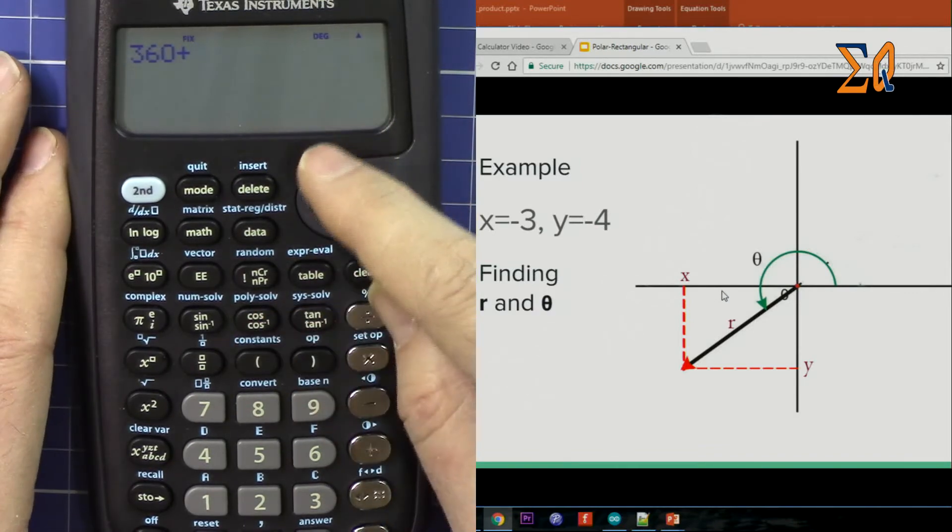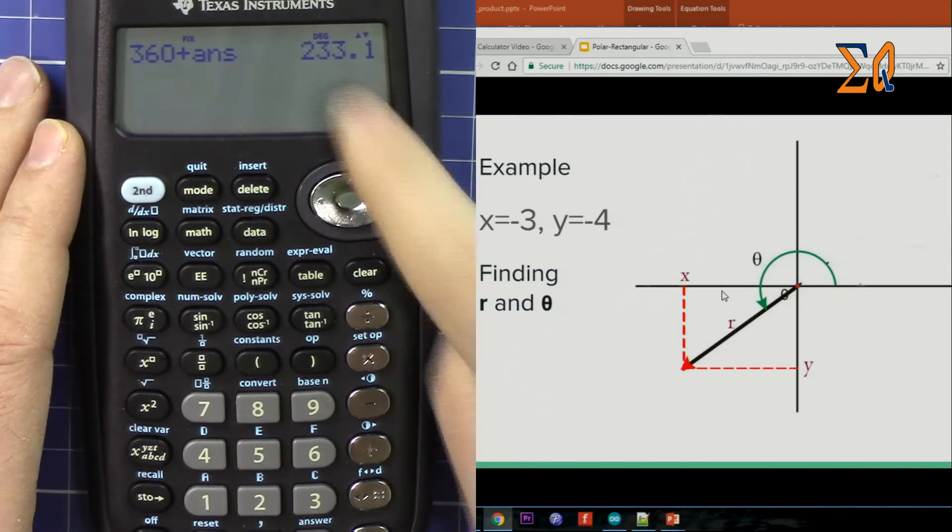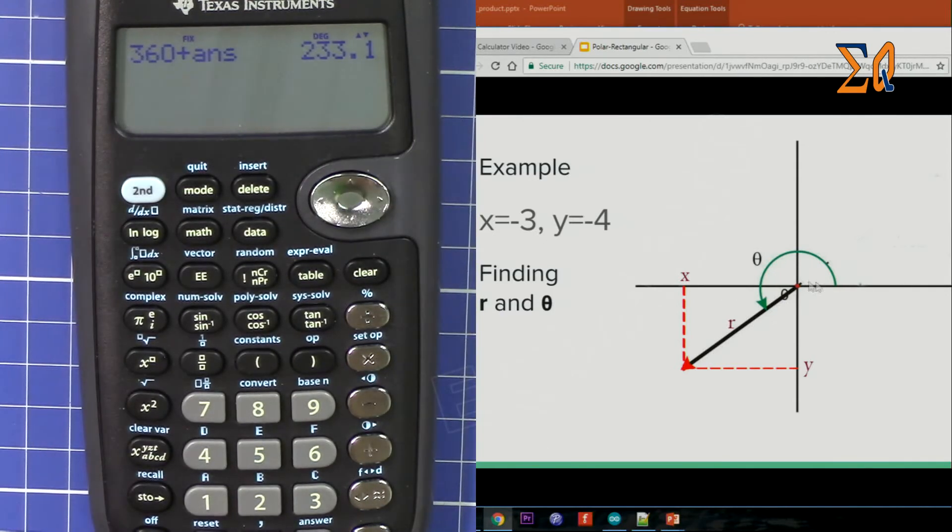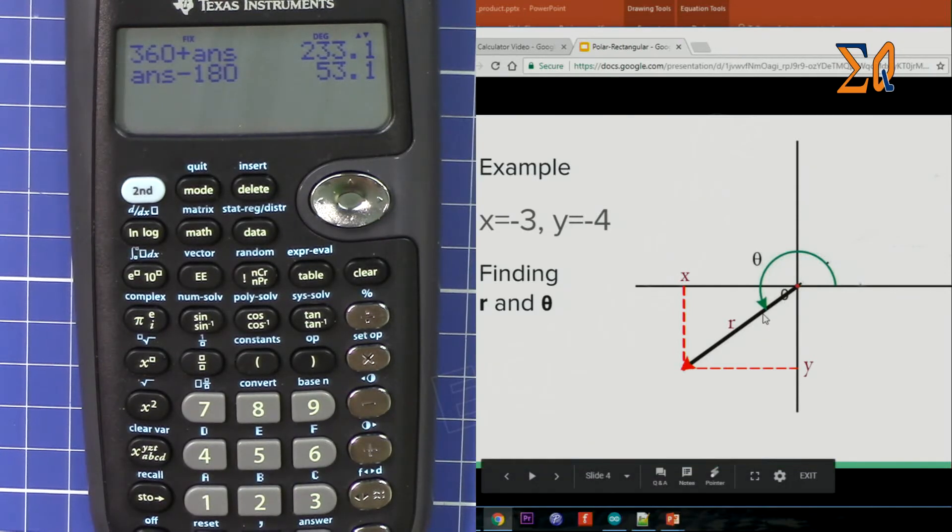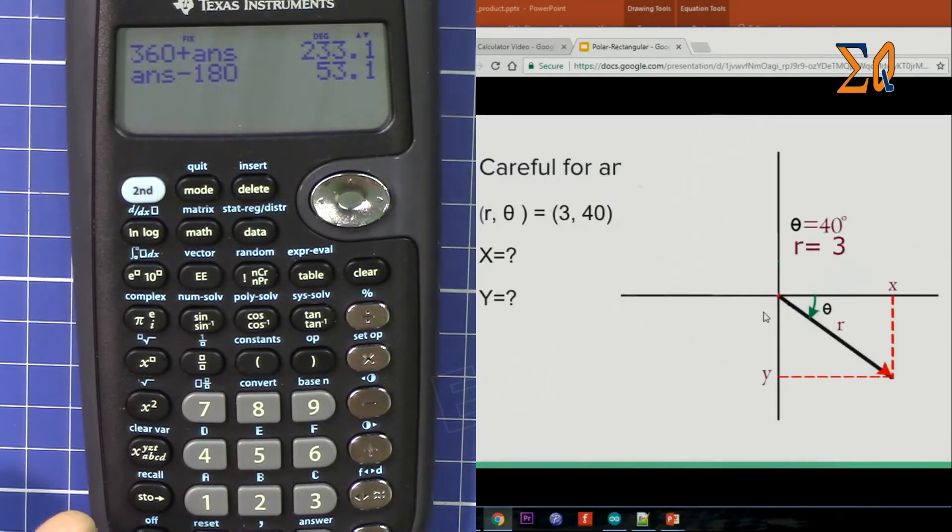Plus, because the value was minus, second function, answer, so that is 233.1 from here. So if you want to just get this value, then subtract 180 and you get that this angle from here to here is 53.1.